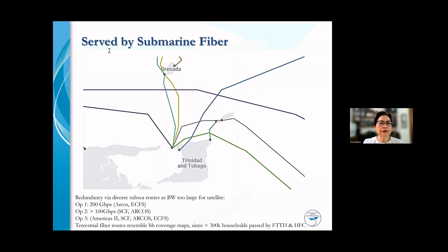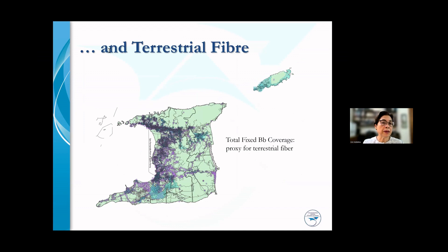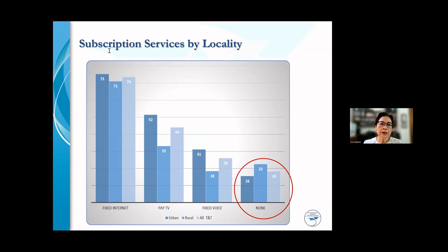Our country is served by several submarine fibers and also by terrestrial fiber. In this slide, we are using fixed broadband coverage as a proxy for terrestrial fiber. The fixed broadband coverage coincides very well with the geographical distribution of our population. You would see that there are a number of different ICT services on offer — fixed internet, pay TV, and fixed voice — but there are significant proportions of the population who do not subscribe to any of these at all.